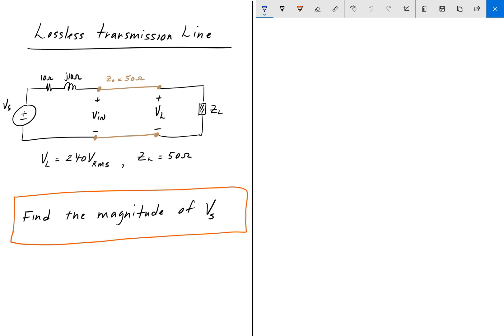Hey everyone, welcome back to Engineering Education. For this next problem we have a lossless transmission line where we have a source Vs with a source impedance of 10 plus J10. We have a transmission line with a characteristic impedance of 50 ohms and our load is also 50 ohms.